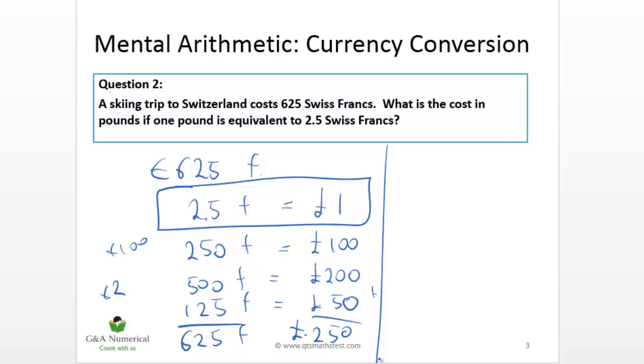We can use the same alternative method. It gets a bit messy, but let's try it and see where it takes us. So again, we start off with the same conversion rule, 2.5 francs is a pound. So that means 1 franc is equal to 1 divided by 2.5. But we don't want 1 franc, we want 625 francs.